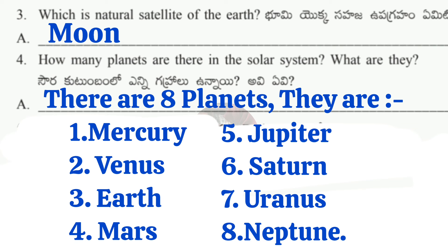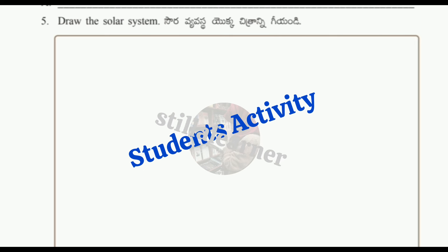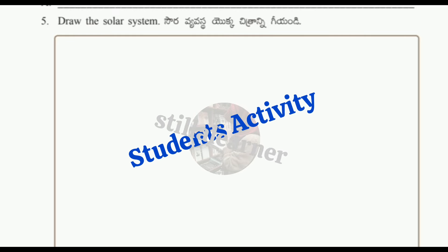Question three: Which is the natural satellite of the earth? Answer: Moon. Question four: How many planets are there in the solar system and what are they? Answer: There are eight planets — Mercury, Venus, Earth, Mars, Jupiter, Saturn, Uranus, and Neptune. Pluto was removed, so only eight remain.